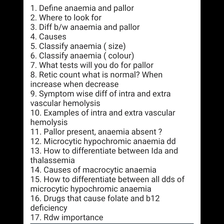What tests will you do for pallor? We usually do four tests. One is the CBC with retic count. Second, we do peripheral blood smear. Third, we do iron profile. And fourth, red cell distribution width (RDW) with retic count. The normal retic count is 0.5 to 2.5 percent. It is increased in hemolytic anemia and decreased in case of certain drugs.